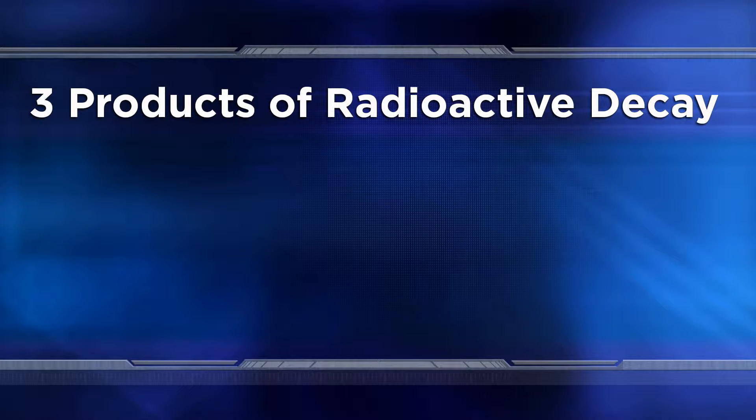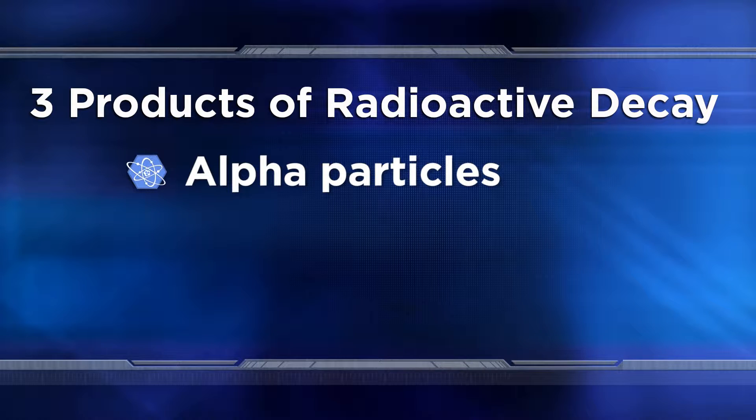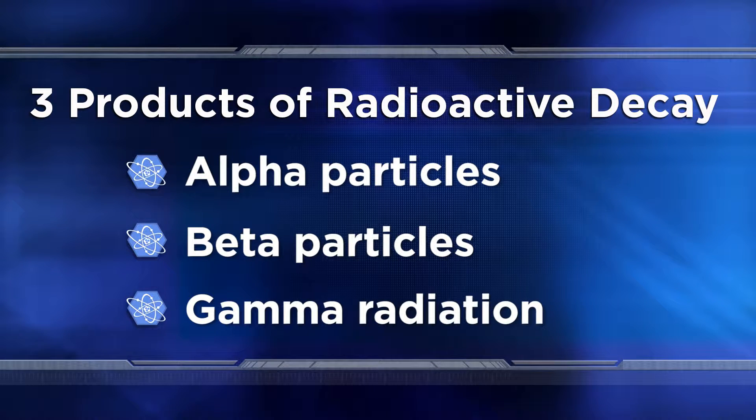Welcome back to Chemistry Matters and our unit on nuclear chemistry. With a solid understanding of atomic structure and radioactivity, let's now look at how atoms can break apart in nuclear fission to make different elements. In our classroom cloud chambers, you were able to see paths left by subatomic particles being emitted from atoms. We call this radioactive decay. When a radioactive atom decays, there are three important products: alpha particles, beta particles, and gamma radiation.